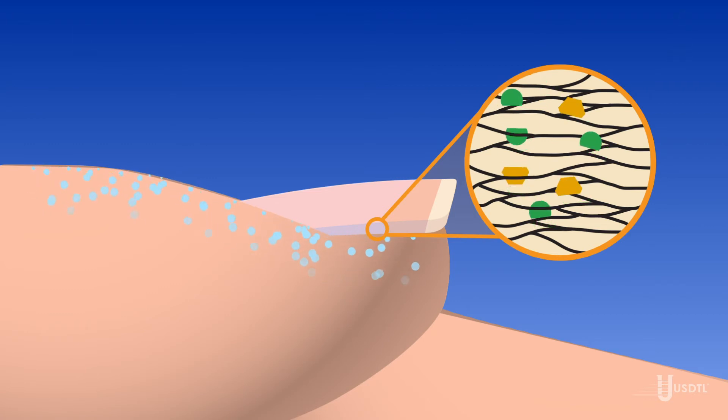The second route of incorporation is sweat and oil from the skin surrounding the nail, depositing drug and drug metabolites as they bathe the nail.